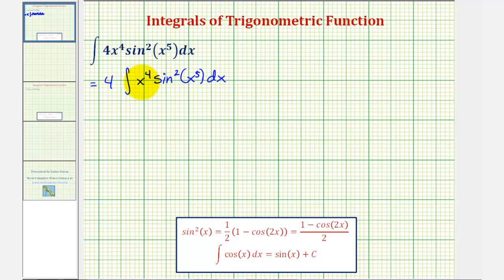Notice how we have x to the fourth here and x to the fifth here, so we'll perform u substitution and let u be equal to x to the fifth. Therefore, differential u equals five x to the fourth dx.